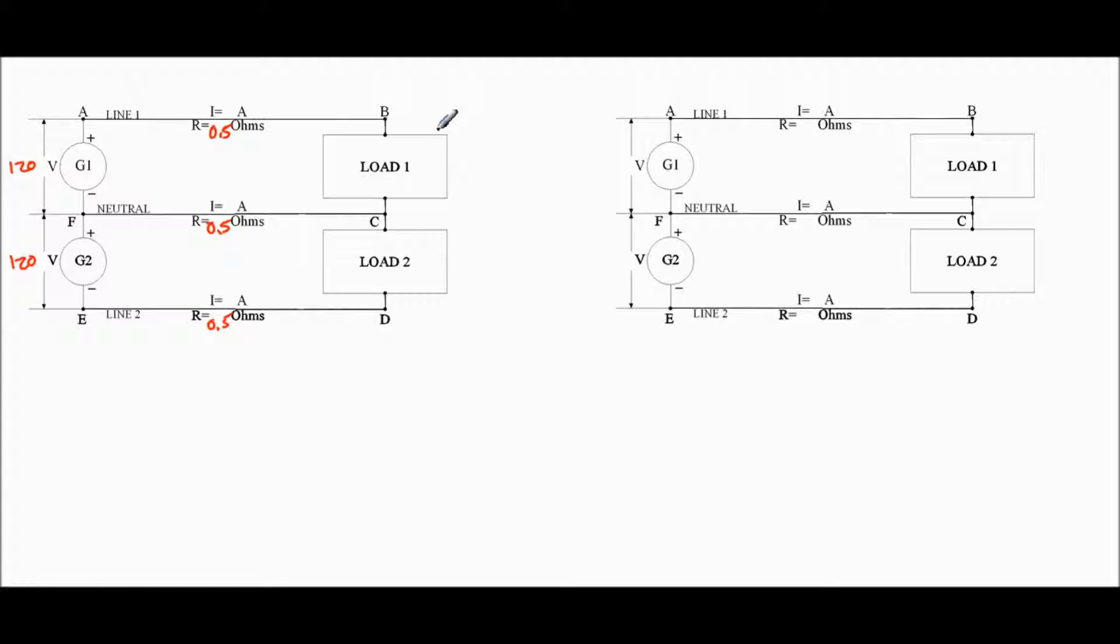And over here, we know load 1 is 30 amps, and load 2 is 14 amps. And the direction of current, in this one, we're going to use conventional. And that's where it flows from positive to negative.